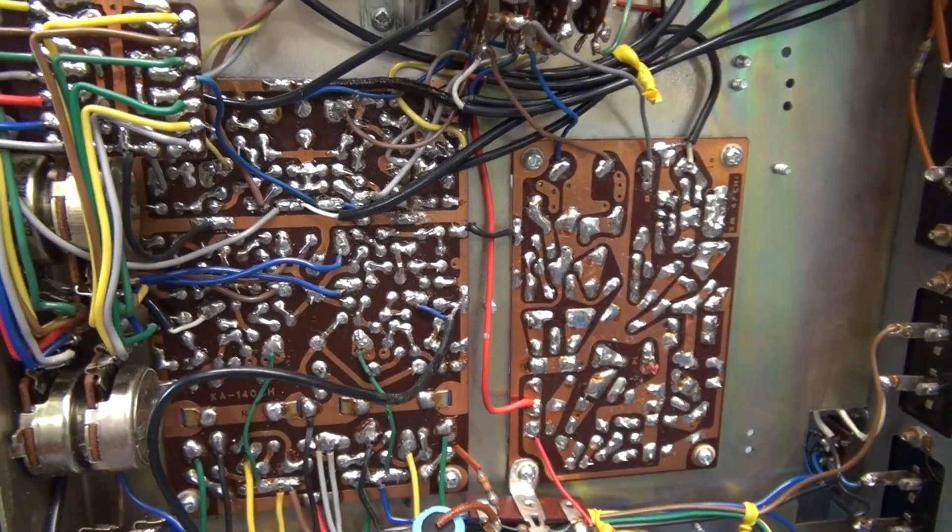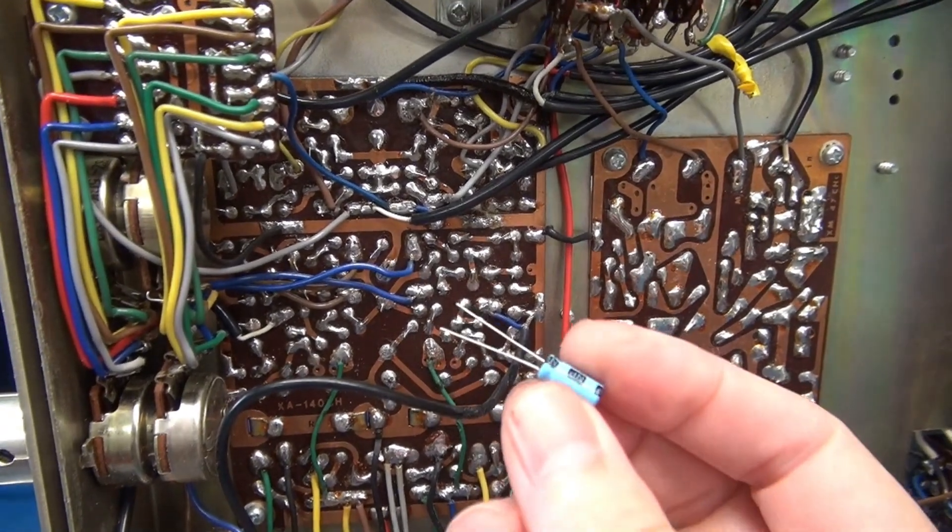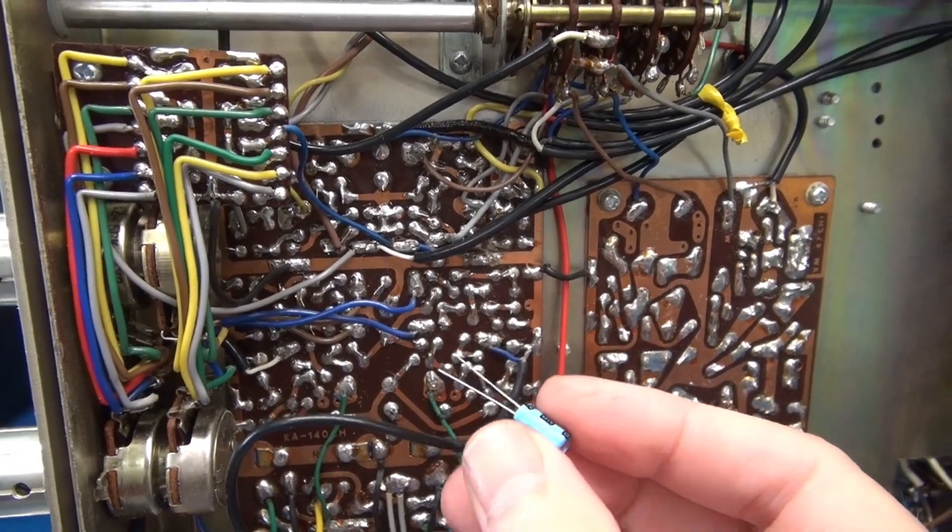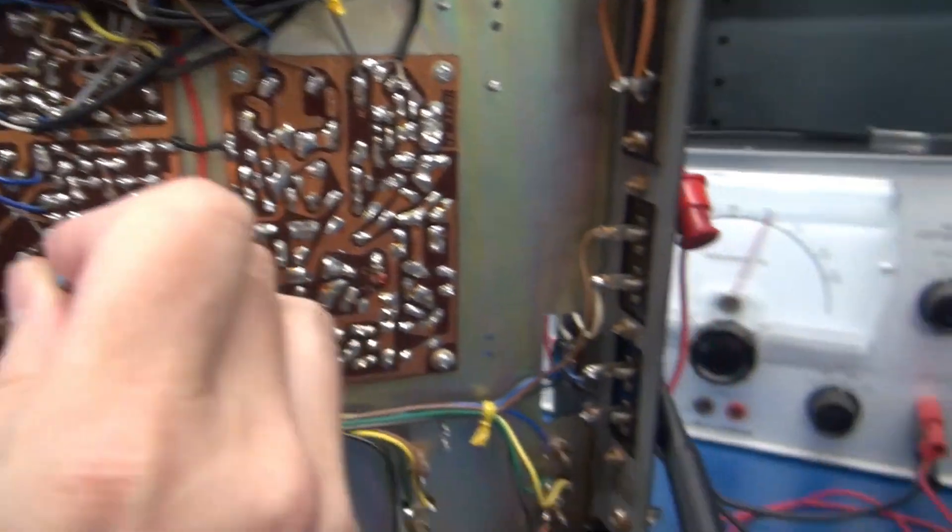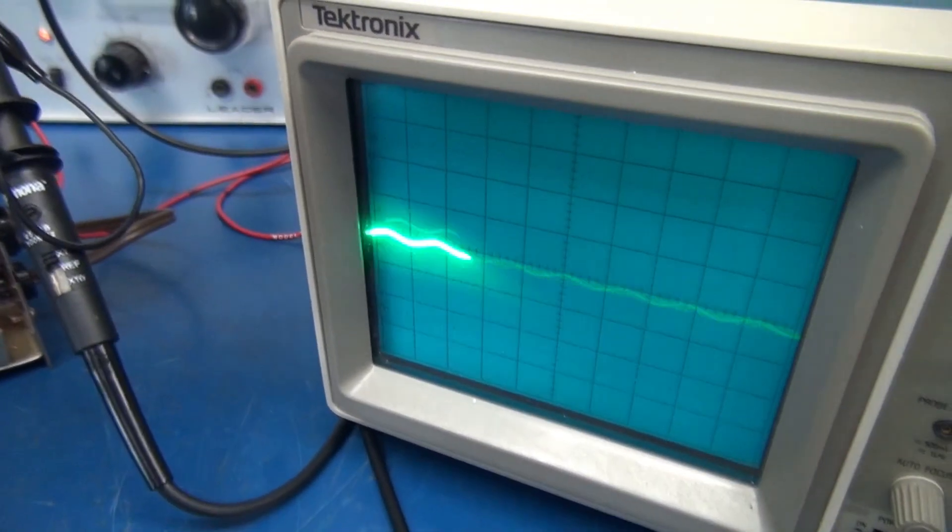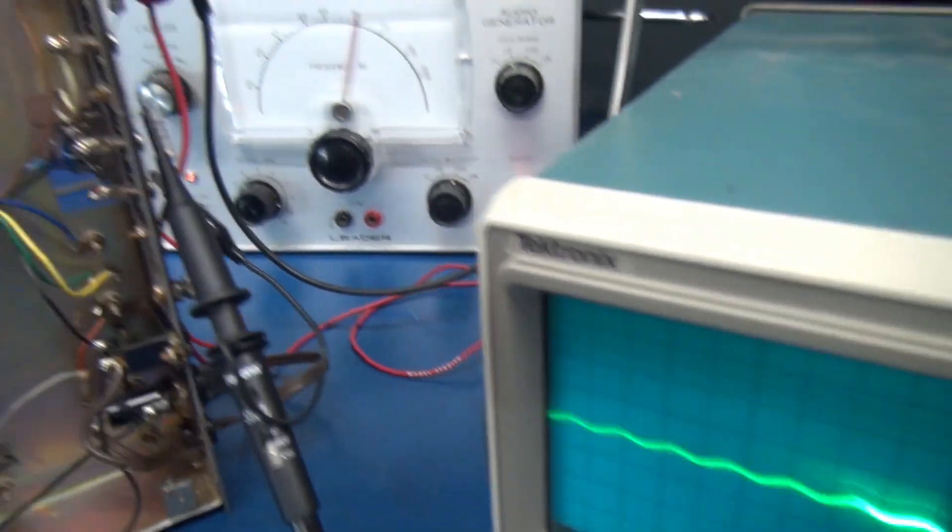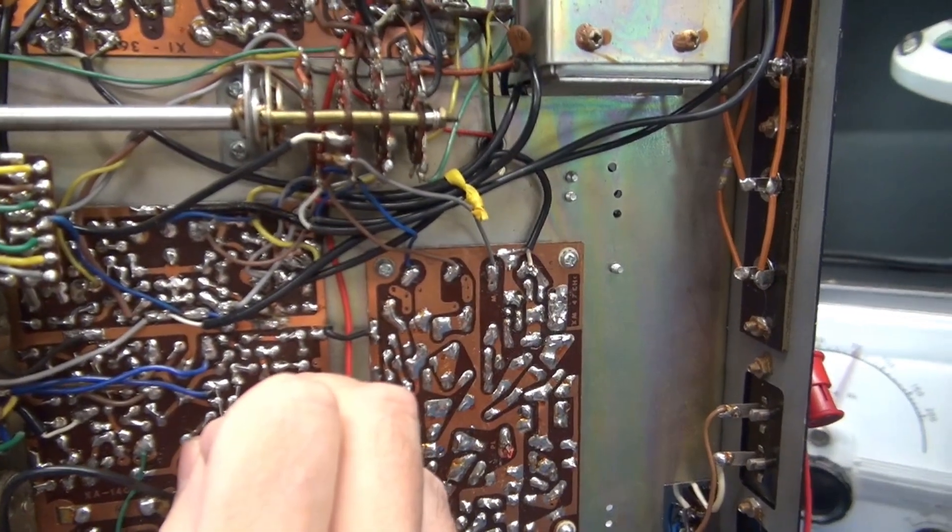What I'm going to do is take this one microfarad bipolar cap. I'm going to touch it across those two pads. So currently on the scope we have a very weak signal.